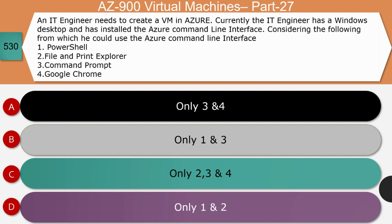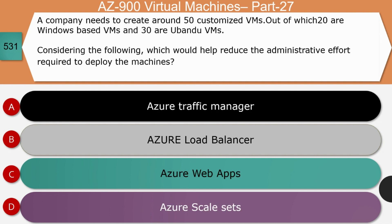Question 10: An IT engineer needs to create a VM in Azure from a Windows desktop with Azure CLI installed. From which tools can they use the Azure CLI — PowerShell, File and Print Explorer, Command Prompt, or Google Chrome? The right answer is PowerShell and Command Prompt (options 1 and 3). PowerShell or command line shell can be used to create VMs. The Azure CLI is used to create and manage Azure resources from the command line or using scripts. In PowerShell, use the New-AzVM cmdlet to create a virtual machine.